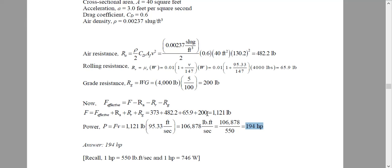To clarify: when calculating air resistance, we consider both car speed and wind speed. Most textbooks use only car speed because wind direction is difficult to measure or predict, and that is also acceptable. If you use only the car speed of 95.33 ft/s, that is fine too. But to be more accurate, both should be included. This example is a good illustration of roadway dynamics and the F = ma equation for vehicle motion.